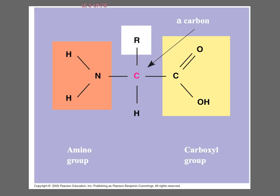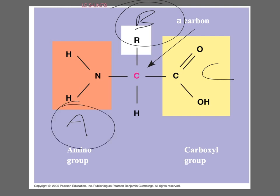Here you can see the different parts of the molecule. On a test, don't be surprised if I label parts A, B, and C and ask: which one is the amino group, which one is the carboxyl group, and which one will change between the 20 different amino acids? That would be the R group. The amino group and carboxyl group stay the same. You should be able to identify the amino group and the carboxyl group for any amino acid.